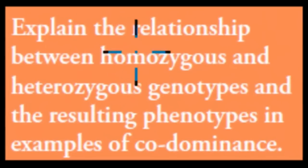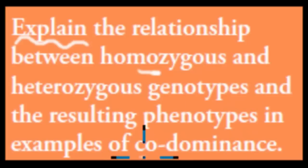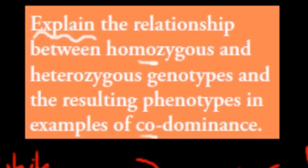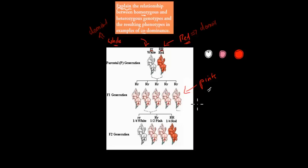The dot point says: explain the relationship between homozygous and heterozygous genotypes and the resulting phenotypes in examples of codominance. This is one example of codominance. The relationship is: if they're homozygous, meaning either all red or all white, then the actual phenotype will be red or white. But if they're heterozygous — if they have a combination of the two — then they will have that blending of color.